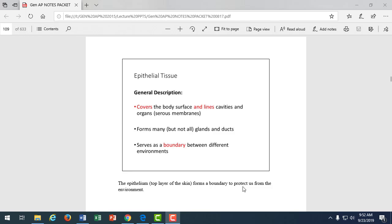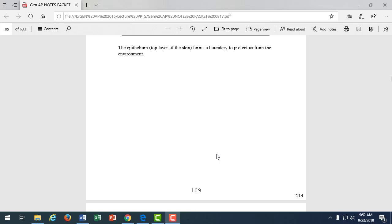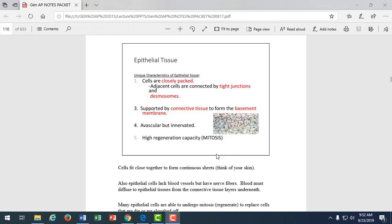Epithelial tissue covers and lines. It forms glands and ducts in the body. Passageways are lined with epithelial tissue. It serves as a boundary between urine and the rest of the body, or blood and the rest of the body, or our digestive contents, or air coming in through the respiratory tract. It's a protective barrier. What happens when the intestinal contents, hydrochloric acid, burns through that epithelial lining? We call that an ulcer.